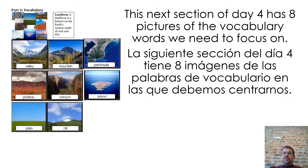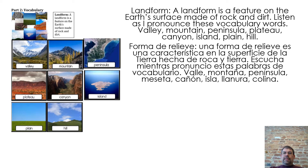The next section of day four has eight pictures of the vocabulary words we need to focus on. A landform is a feature on the earth's surface made of rock and dirt. Listen as I pronounce these vocabulary words: valley, mountain, peninsula, plateau, canyon, island, plain, hill.